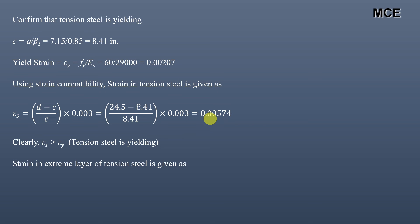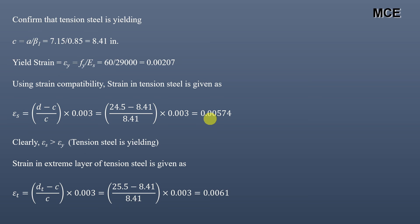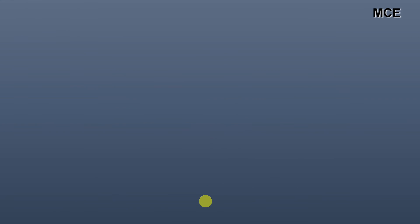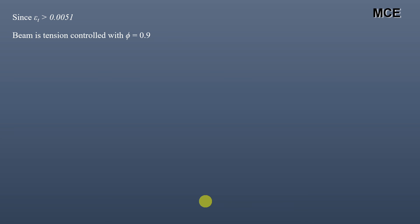We also find the strain in the extreme layer of tension steel: εt = (dt − c) / c × 0.003 = (25.5 − 8.41) / 8.41 × 0.003 = 0.0061. Since εt > 0.005, this beam is tension-controlled with a strength reduction factor φ = 0.9.